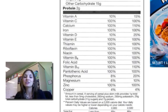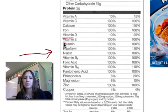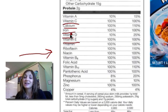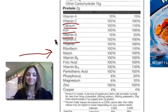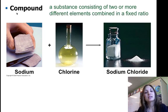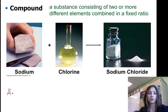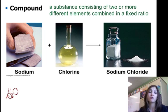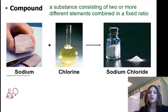Next time you have a snack, take a look at the nutrition facts. For example, here in this Total cereal — look at that: 100% of vitamin E, 100% of vitamin C, 100% of calcium, 100% of the iron you need in a day — and a lot of this is because it has been fortified. So back to our elements: a compound is any substance that consists of two or more elements in a combined fixed ratio. H2O, water — we have two hydrogens and one oxygen. That's a fixed ratio: every molecule of water has two hydrogens to one oxygen, so anything with that kind of set ratio is considered a compound.